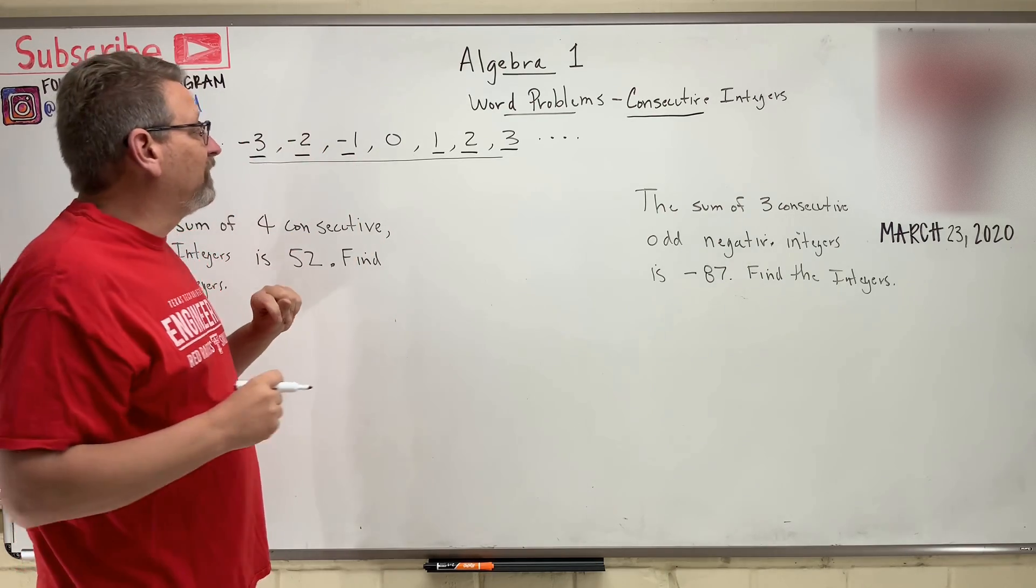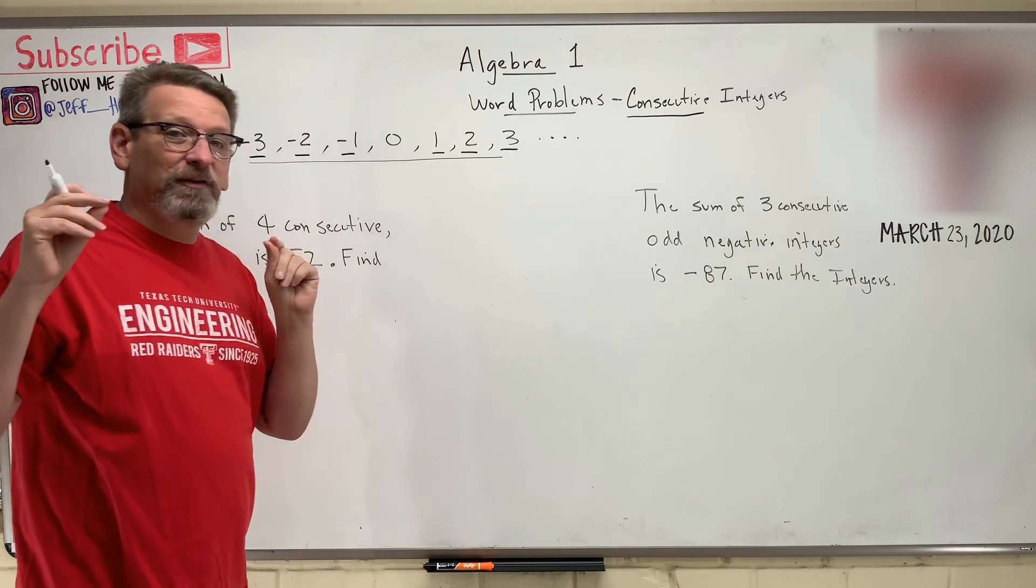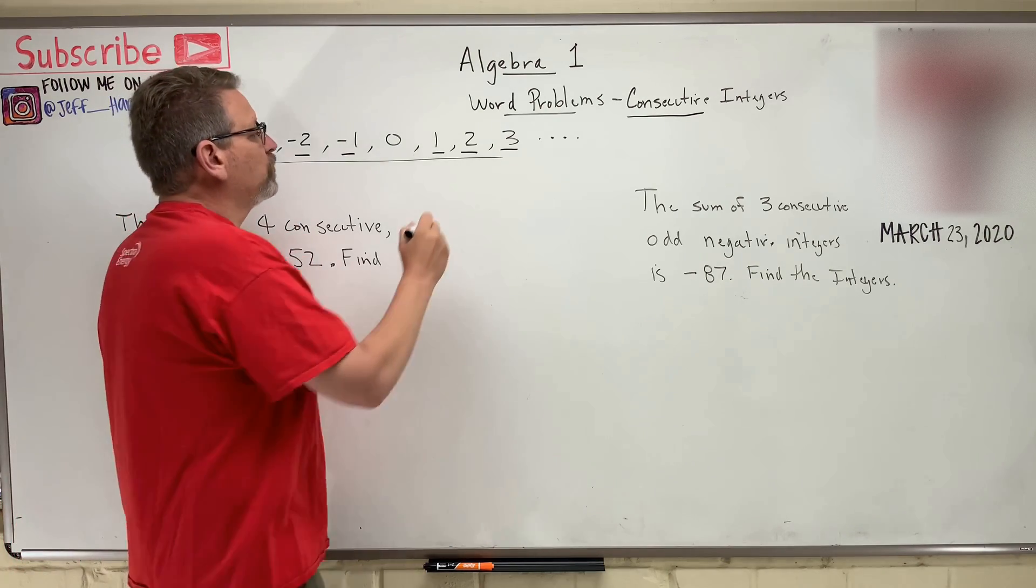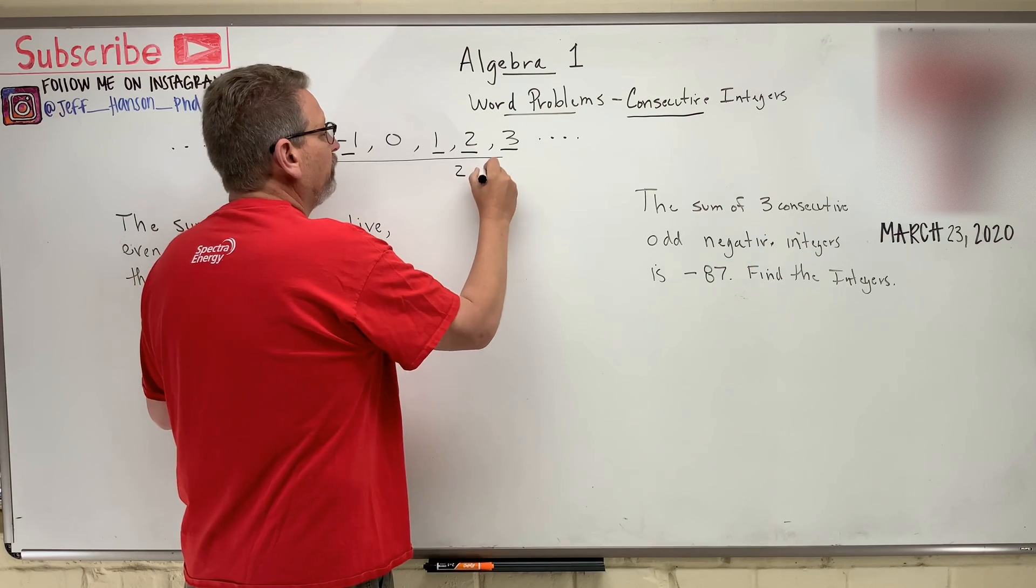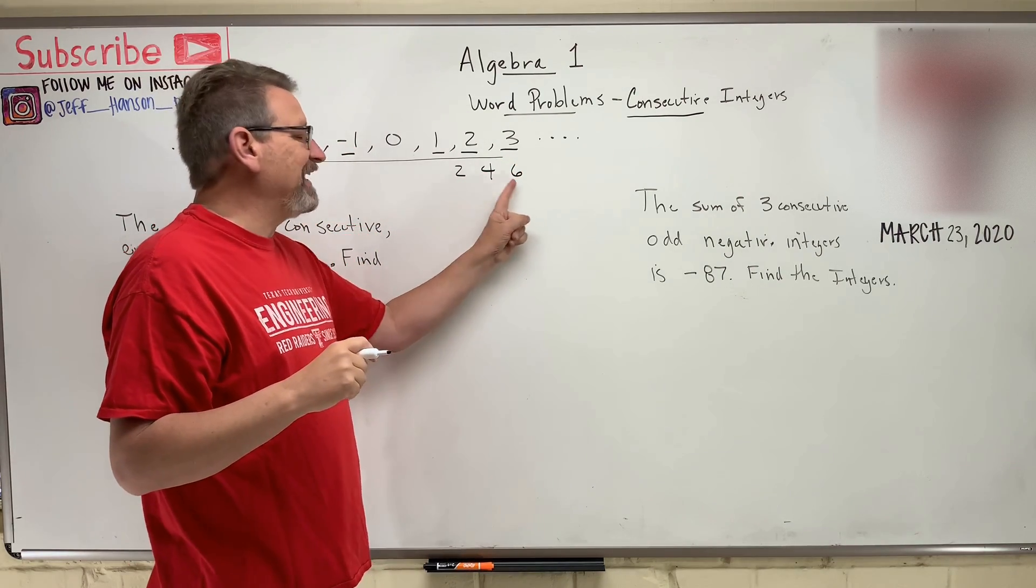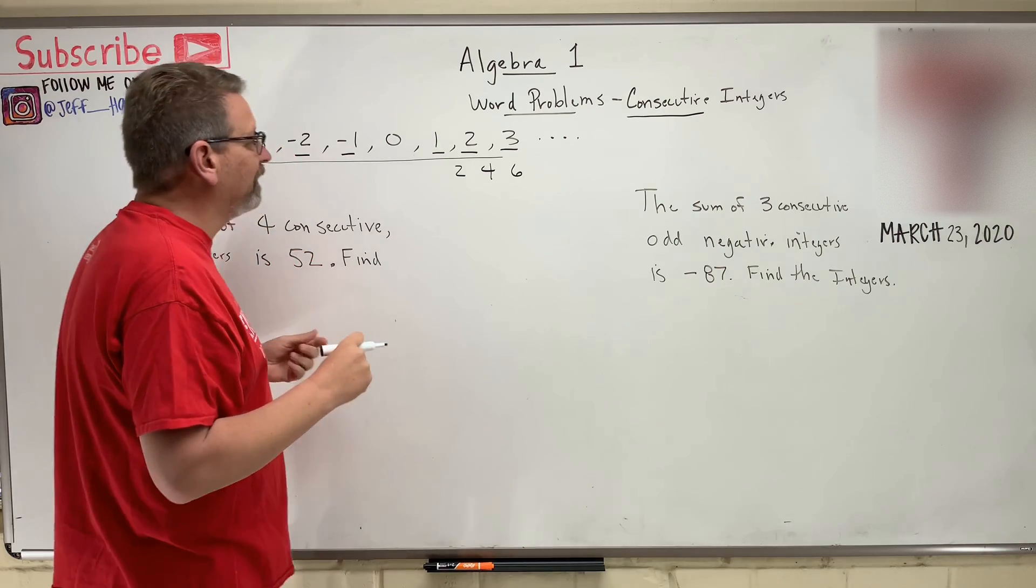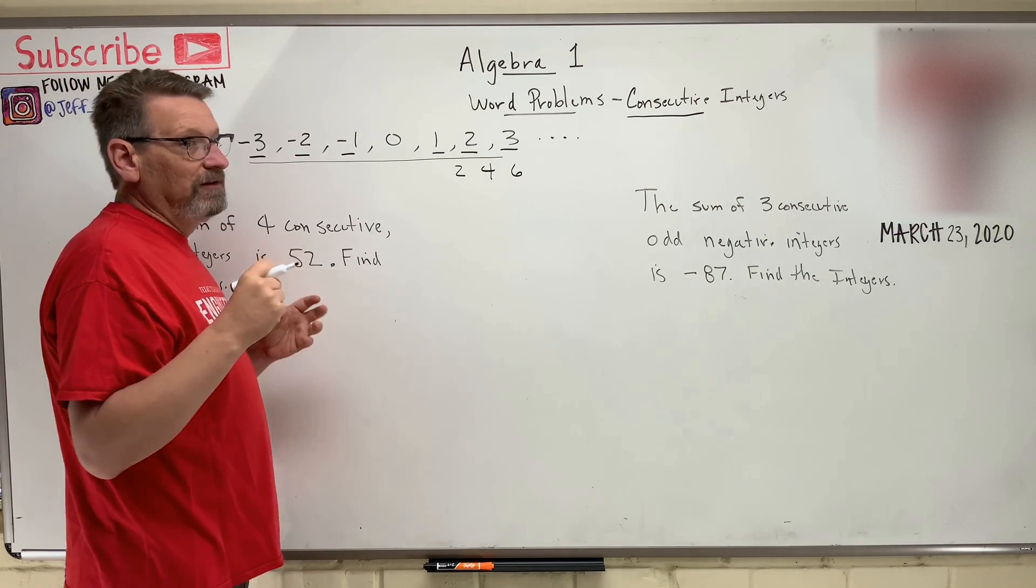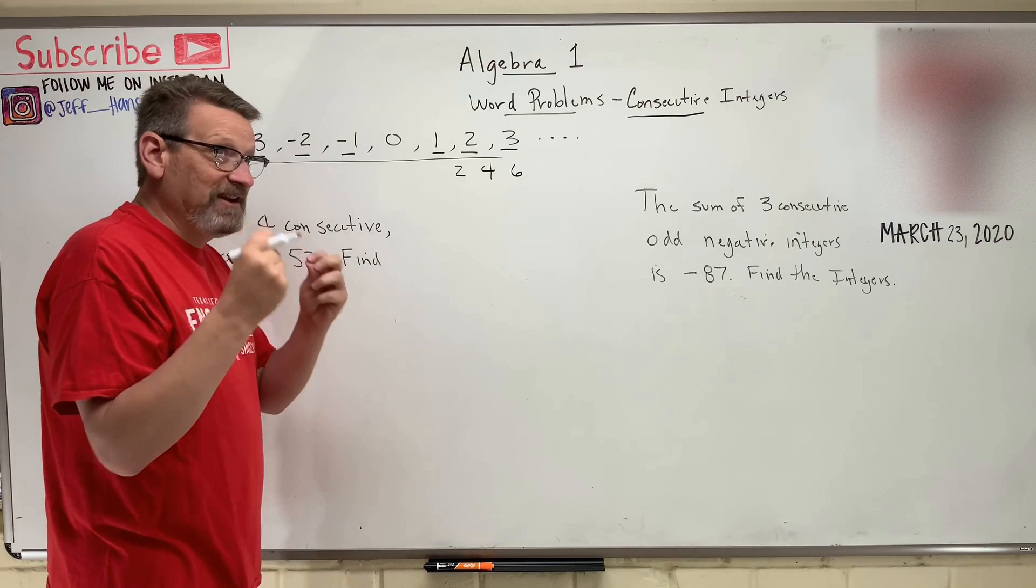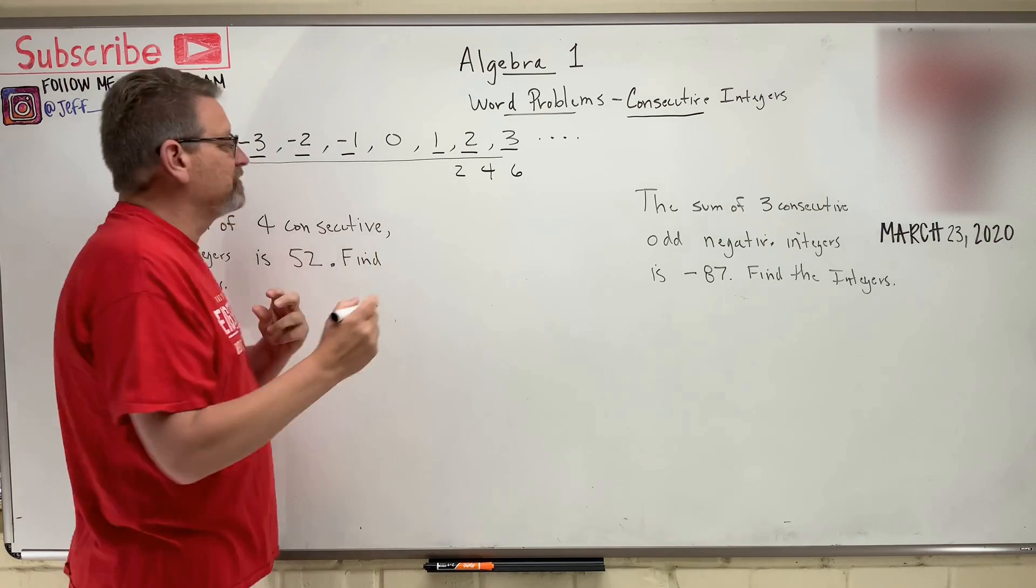In addition to that, you could have something like consecutive even integers, which would be like two, four, six, right? Those are consecutive even integers, or like consecutive negative integers, consecutive negative odd integers. How about that?